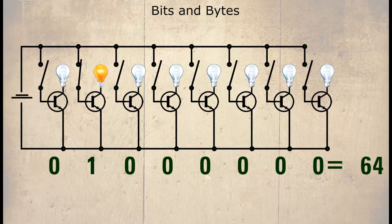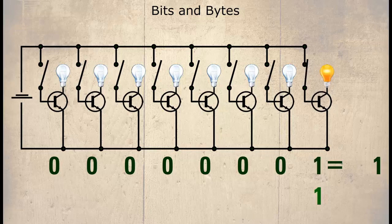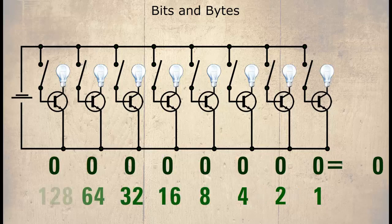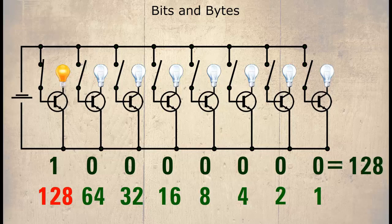To make this clearer, let's create a conversion table. Under the far right transistor we shall put a one — so when this transistor is on it will mean decimal one. Let's double this number making it two and put that under the next transistor to the left. Double the two and make four and put that under the next transistor to the left. Now if we switch on the last three transistors then add the decimal numbers under the ones that are on — four plus two plus one makes seven. So binary 00000111 is equal to decimal seven.